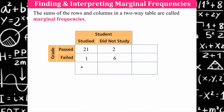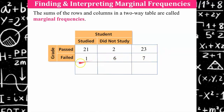Now let's talk about marginal frequencies — remembering that they are the total of a row or a column, or the total number of people in the bivariate data study. So 23 students passed; 7 students failed. Totaling the studied column: 22 students studied. 8 students did not study. And there is a total of 30 students who were surveyed.